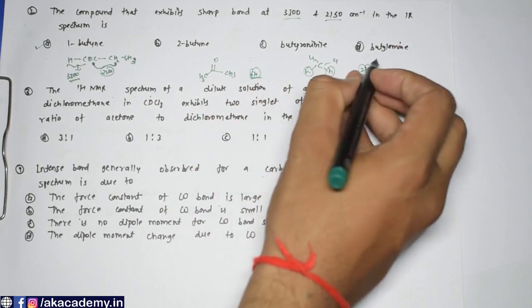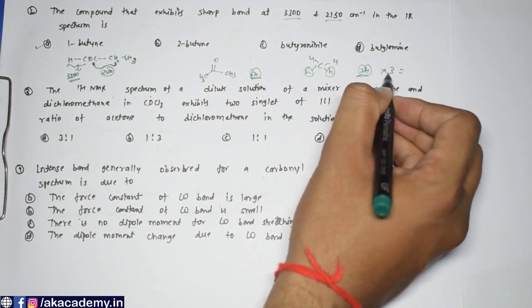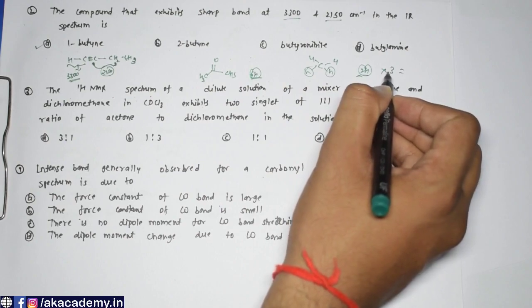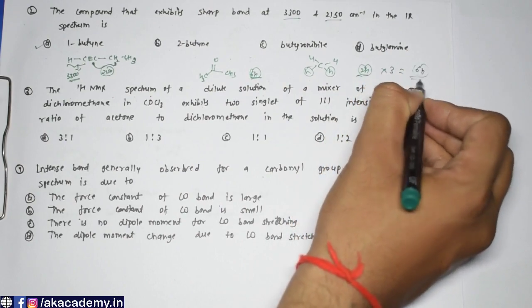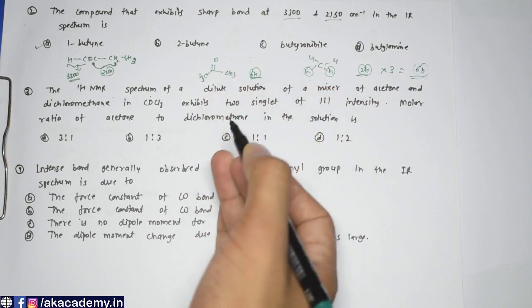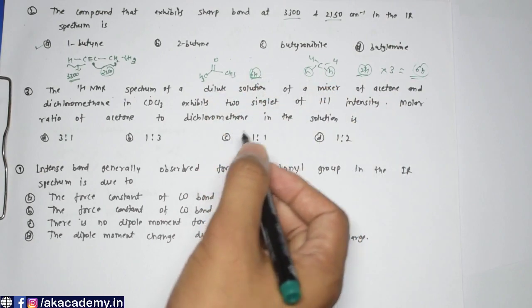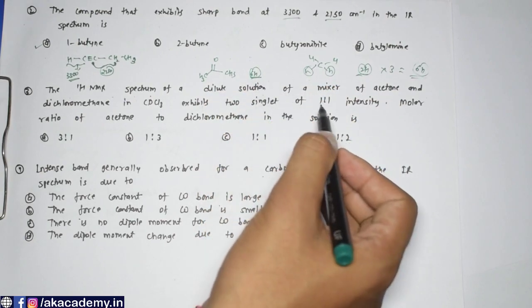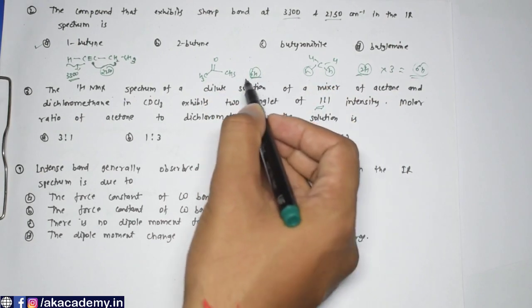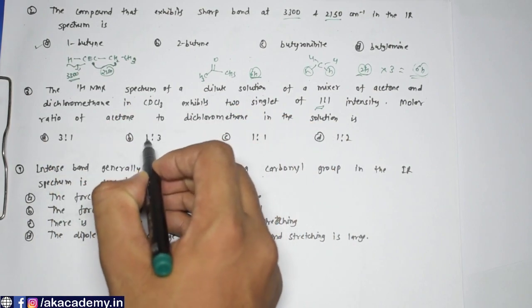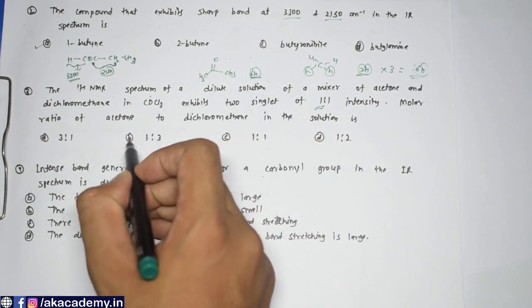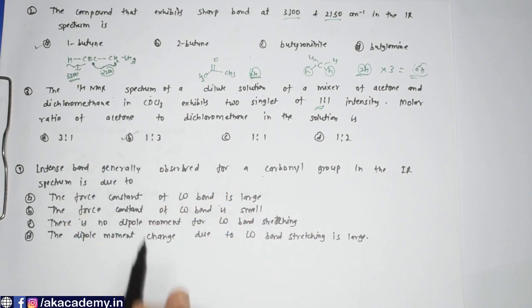To maintain a 1:1 intensity ratio, if we multiply the dichloromethane by three — meaning three molecules — we get six hydrogens total, matching the six from acetone. So we need one molecule of acetone and three molecules of dichloromethane to get 1:1 intensity. Option B is the correct answer.